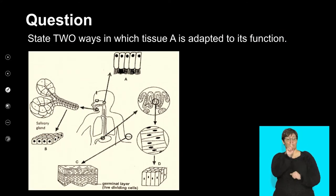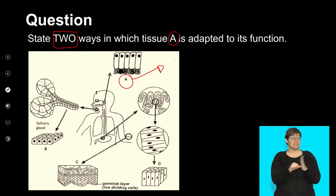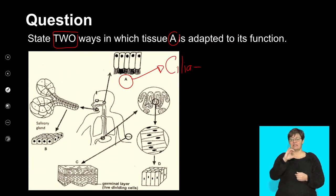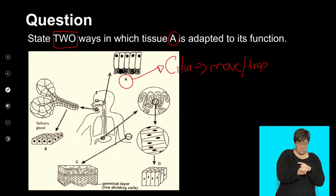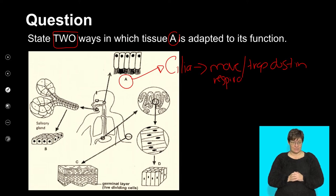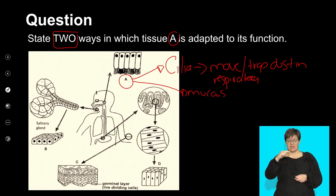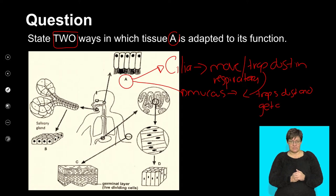The last question asks: state two ways in which tissue A is adapted for its function. First, it has cilia — the cilia can move and trap dust in the respiratory system. Second, it has mucus glands, and the mucus glands also trap dust and get it out of the body.